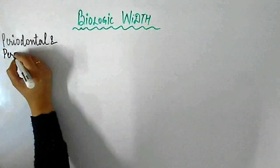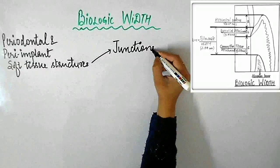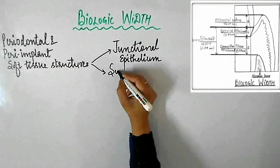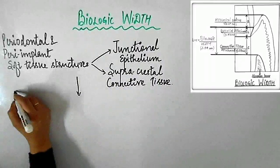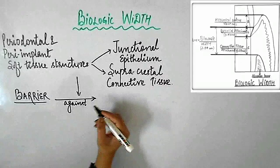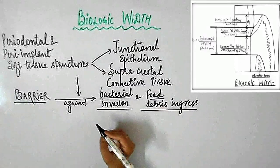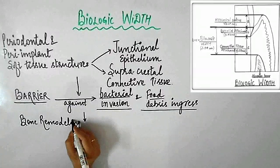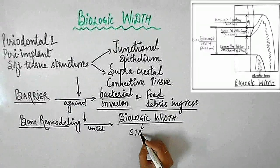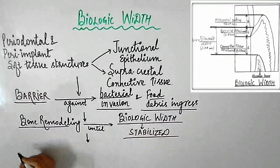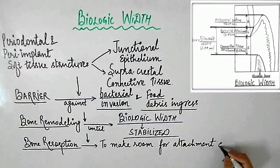The next factor influencing marginal bone loss is biologic width. It refers to the area of periodontal and peri-implant soft tissue structures — that is, the junctional epithelium and the supracrestal connective tissues, as you can see in this picture — that acts as a barrier against bacterial invasion and food debris ingress into the implant-tissue interface. Bone remodeling around an implant neck progresses until the biologic width has been created and stabilized, meaning bone resorption takes place to make room for attachment on the lateral surface of the implant fixture.